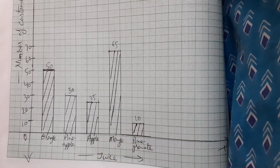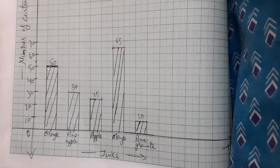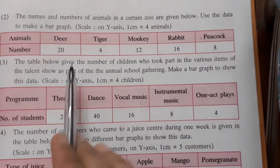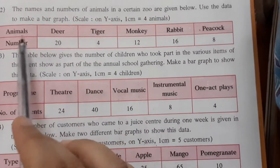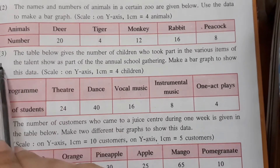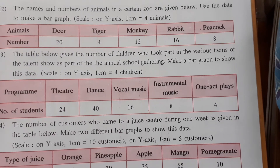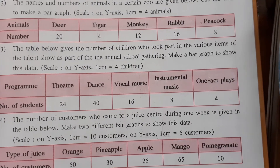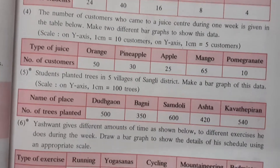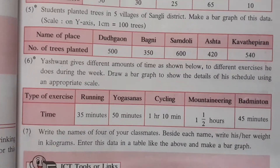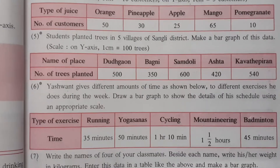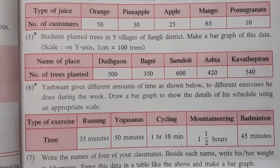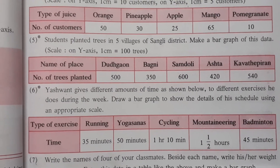I hope it is clear to you. These sums — the 2nd, 3rd, 5th, 6th, and 7th — you all have to do as homework. We have completed the 4th sum. If you find any difficulty in solving these sums, just comment in the comment box and let me know. Thanks for watching.